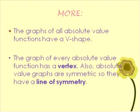The graphs of all absolute value functions have a V shape. The graph of every absolute value function has a vertex, and it also has a line of symmetry.